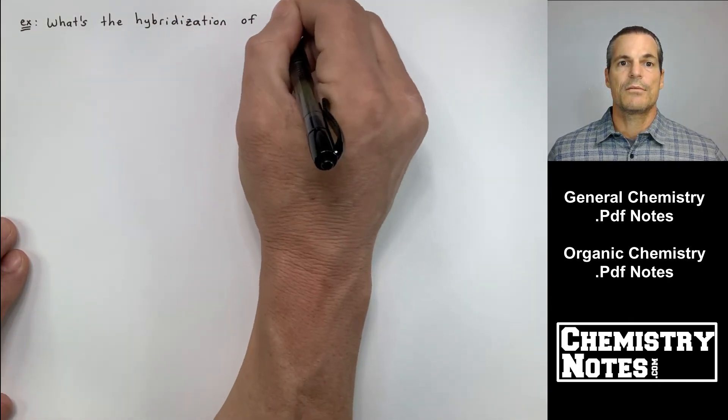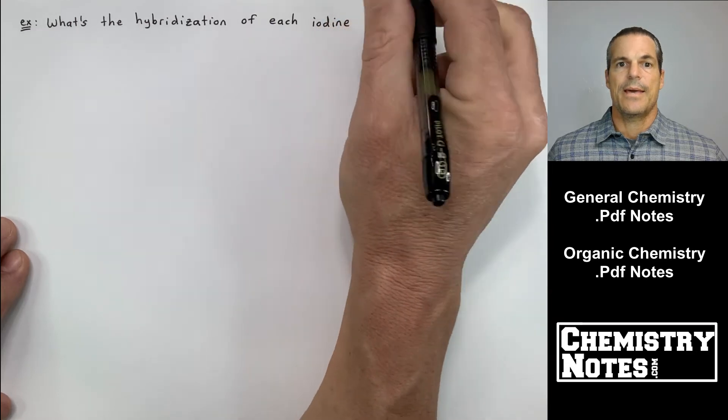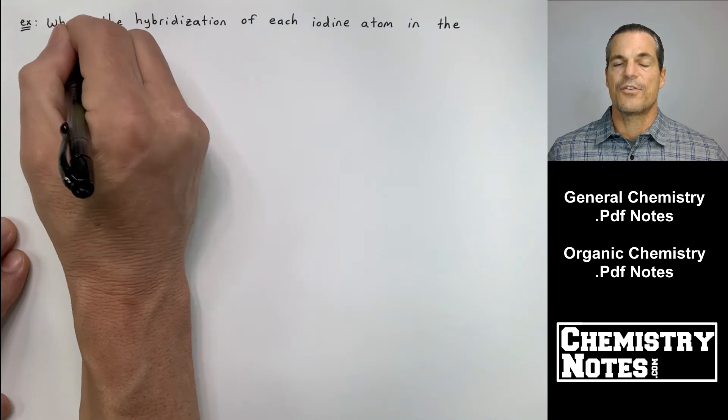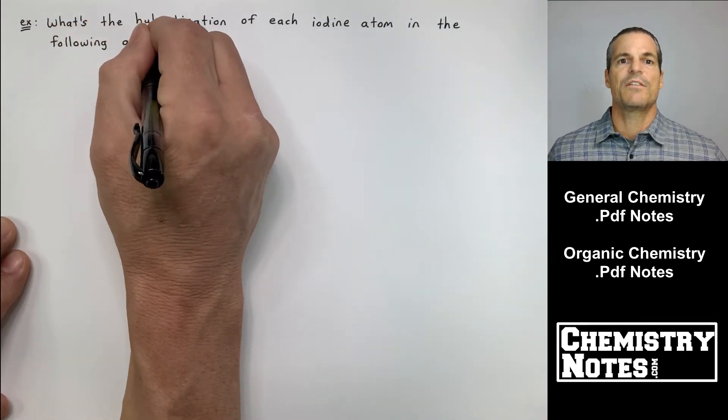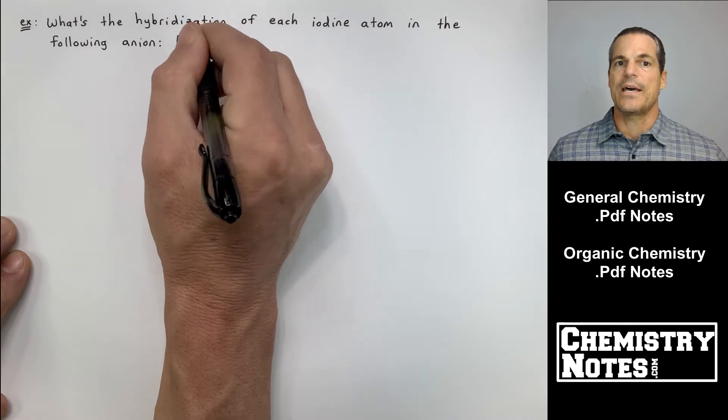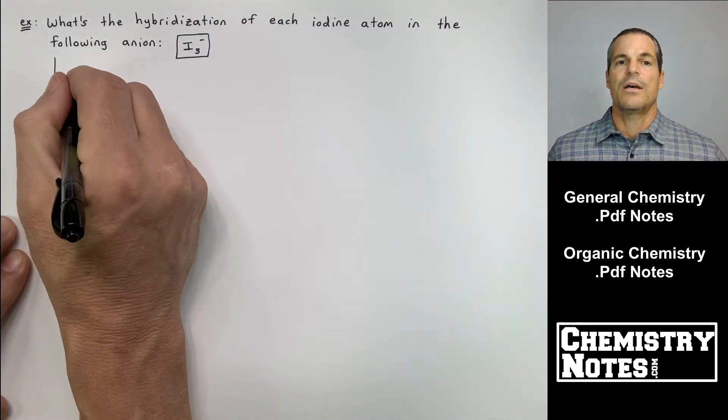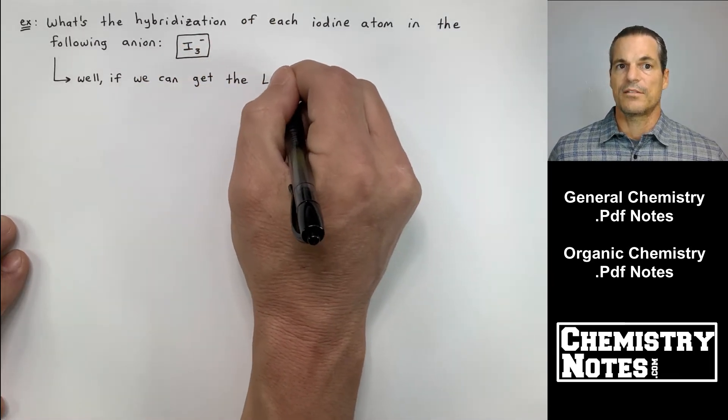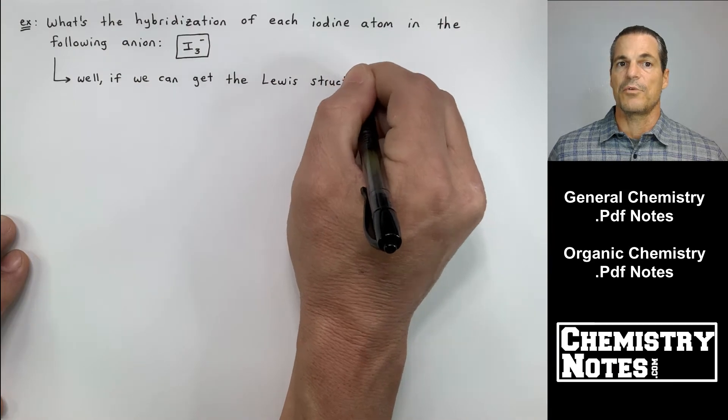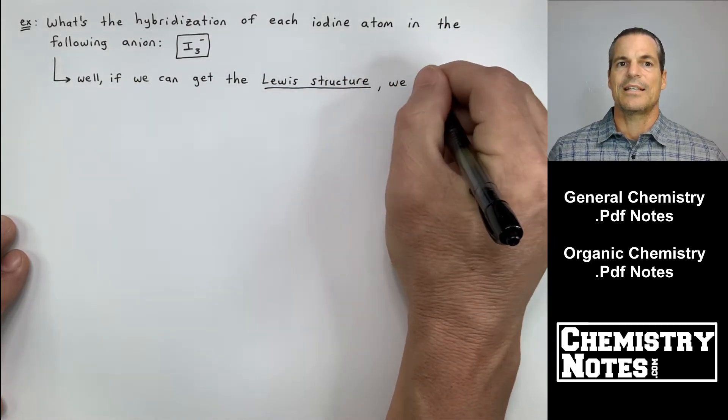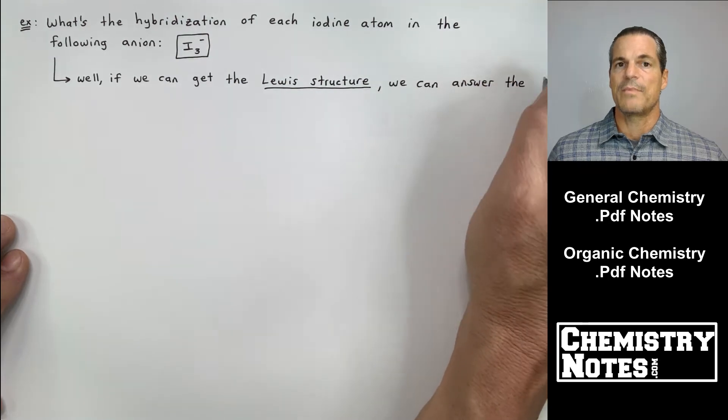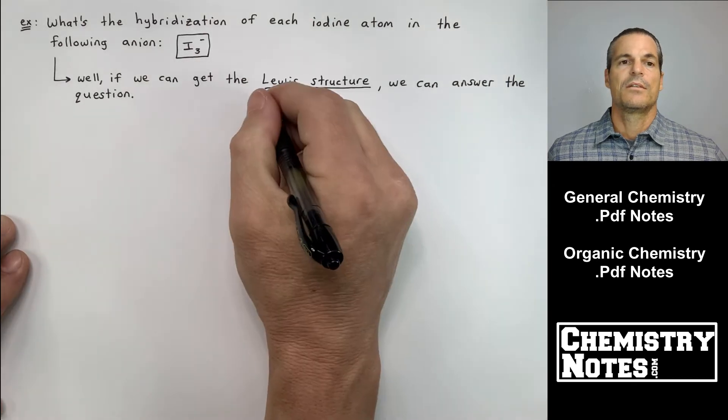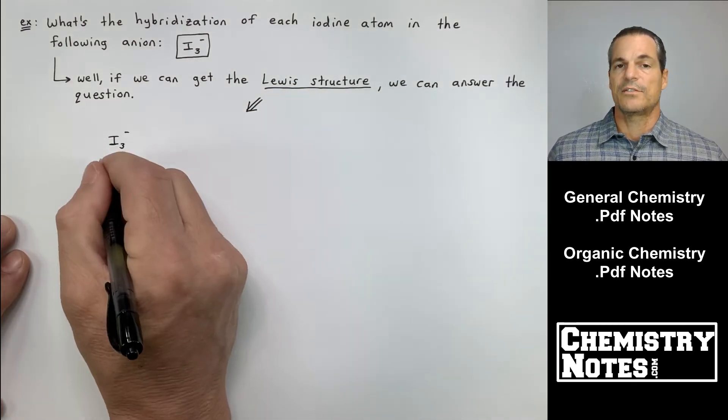What's the hybridization of each iodine atom in the ion I3-? So what's the hybridization of each iodine atom in the following anion I3-? Now I3- looks nice and simple, but the Lewis structure, and I remember we did this specific Lewis structure for I3- in section eight, it actually has a trigonal bipyramidal arrangement around its central atom. It's got five effective pairs.